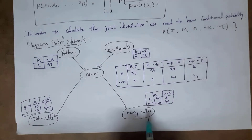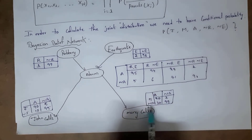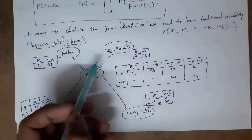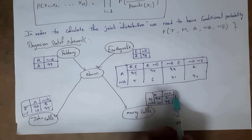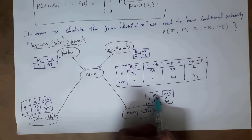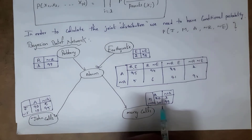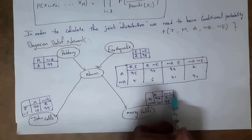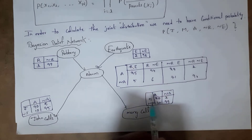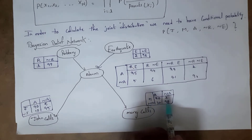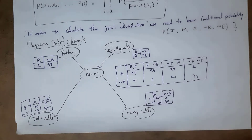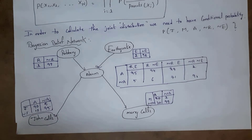For Mary calls, the parent is also alarm. Whenever alarm rings, there is a 70% chance Mary will call police and 30% she will not. Whenever alarm does not ring, there is a 1% chance Mary will call police and 99% she will not. These are the conditional probability tables for each and every variable.